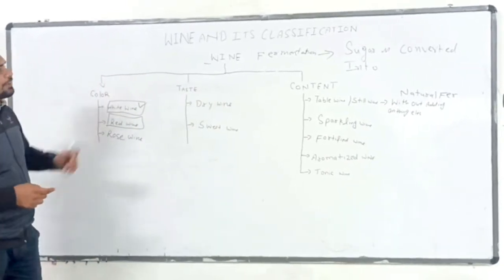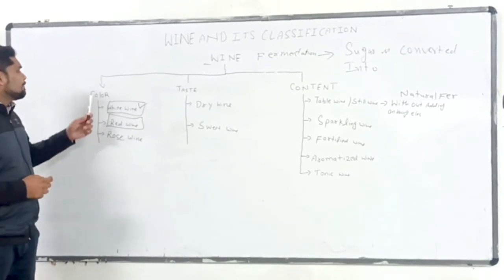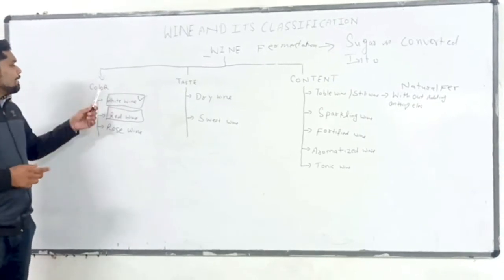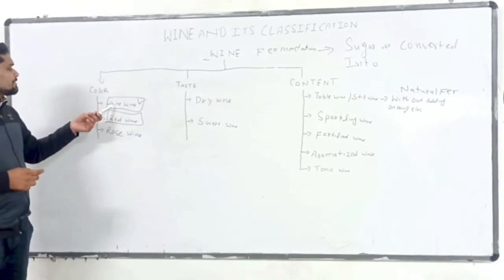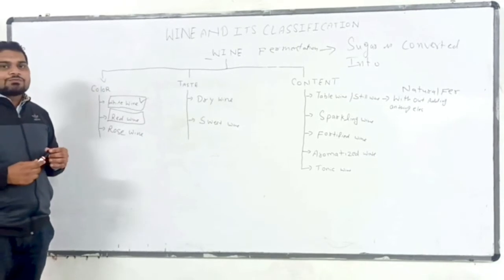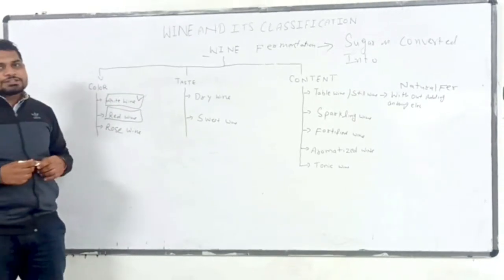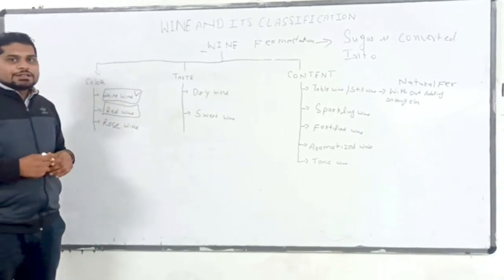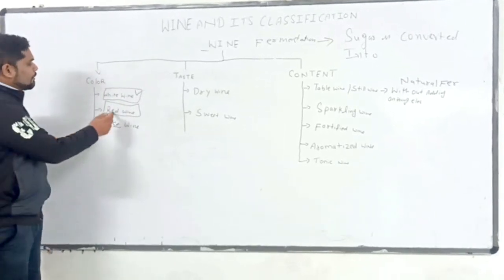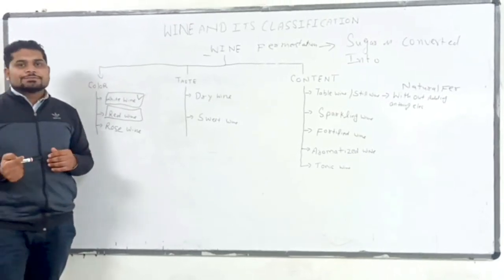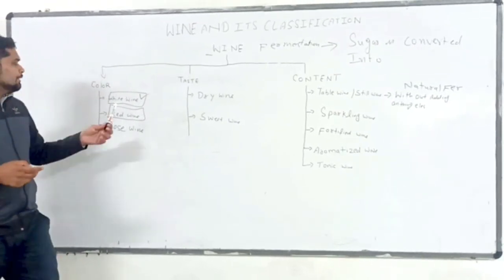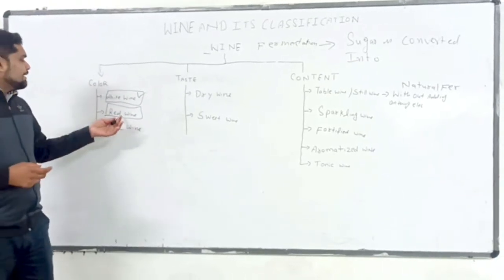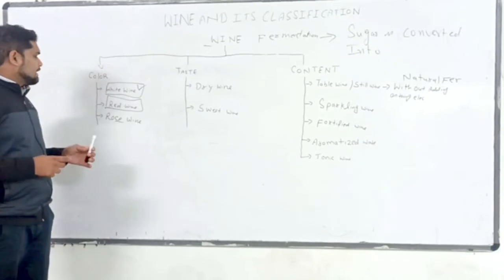Now we will talk about its classification. Firstly, we classify according to the color. First is white wine, which is made from green grapes through fermentation process. Red wine is made from black grapes through fermentation process.